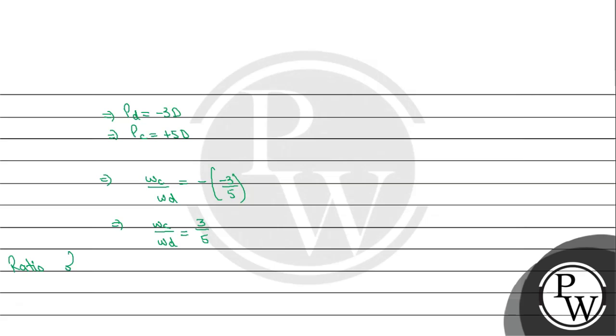So the ratio of dispersive powers is 3:5. This is the final answer for the given question — option B. I hope you understood well. Thanks.